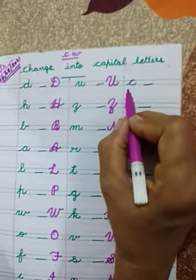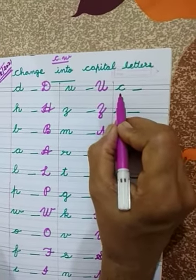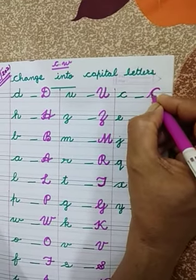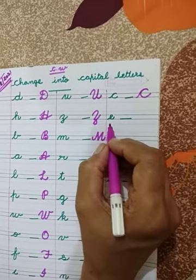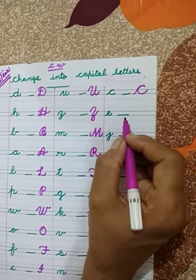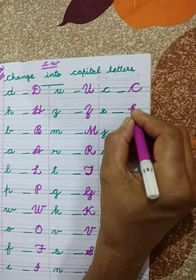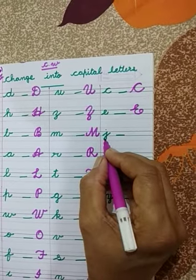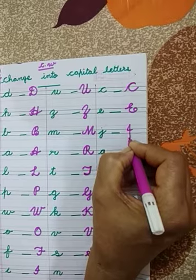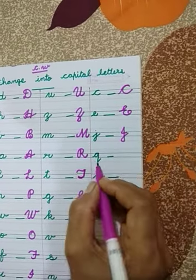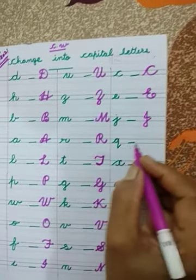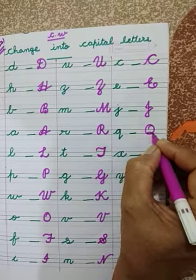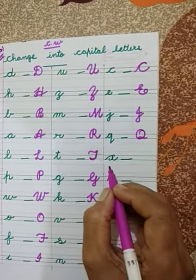Tell me children, which letter is this? Very good — KSU small letter C. We have to write here KSU Capital letter C. This is KSU small letter E — change into capital letter. Then we have to write here KSU capital letter E. This is KSU small letter J. We have to write here KSU capital letter J. This is KSU small letter Q — change into capital letter. This is KSU capital letter Q.